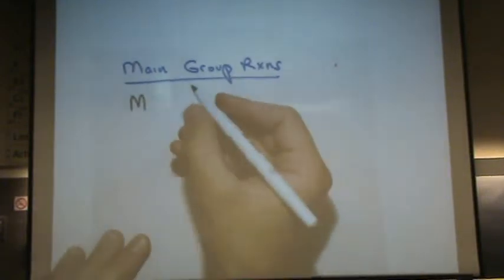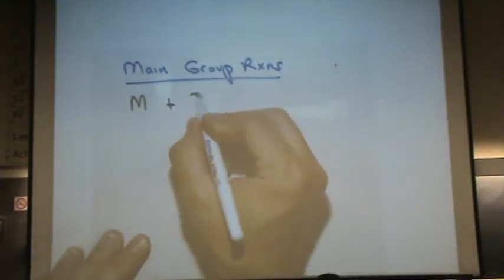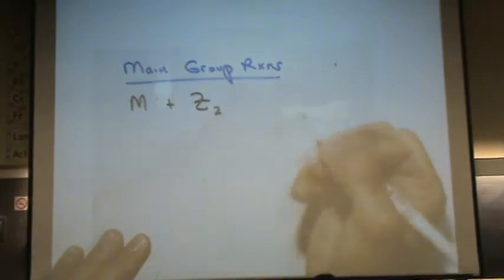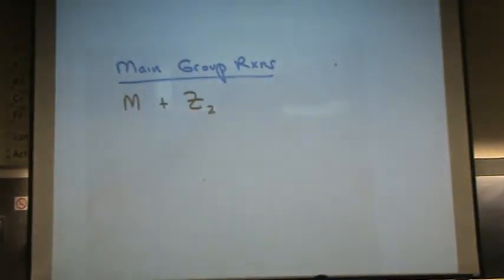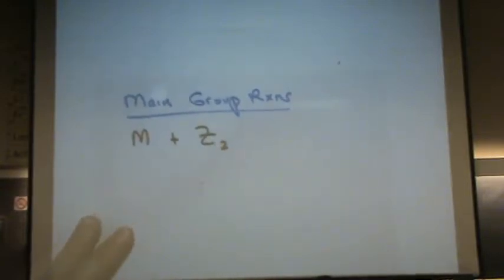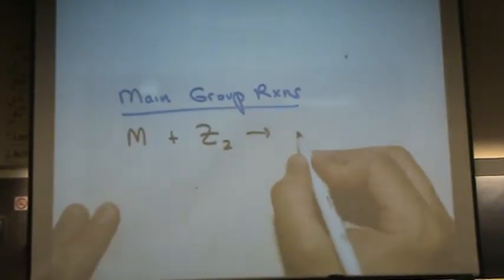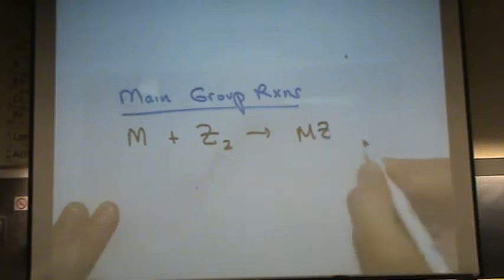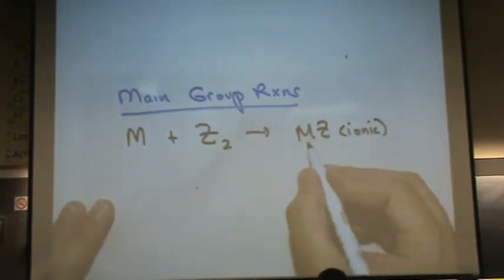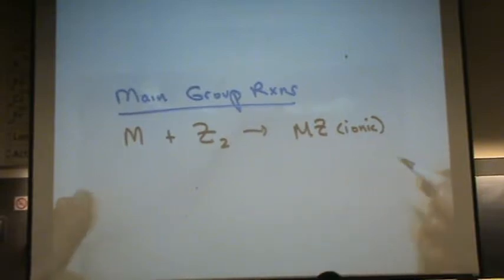The general concept is whenever you have a metal and you add something that has two parts, like Z and another Z, or Z and W, or whatever has two parts, one of those parts will attach to the metal and make an ionic compound. So it will be like M plus and Z minus, or something like that.